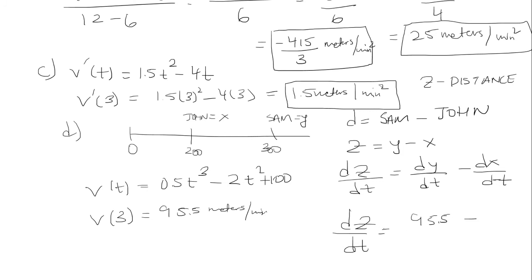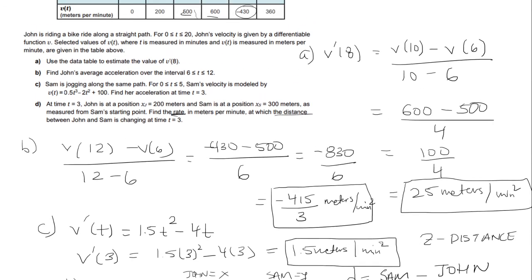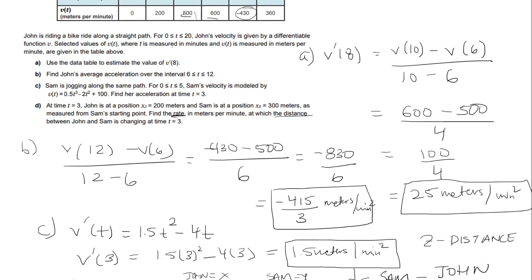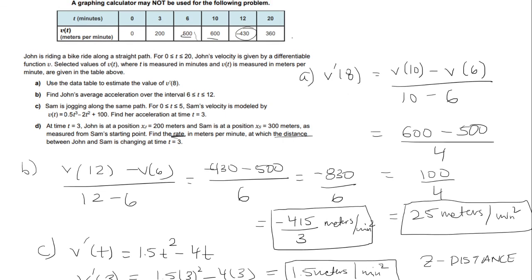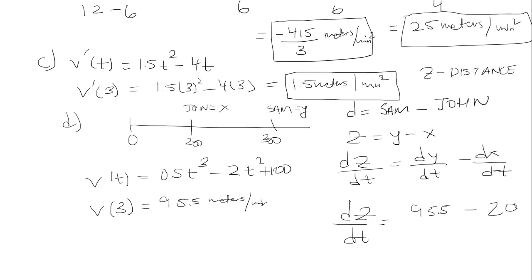Now what is John's velocity? We're actually given John's velocity at time t equals 3. And as we can see, John's velocity at time t equals 3 is 200. So we're going to subtract 200 from 95 and a half and we get that it's negative 104.5 meters per minute.